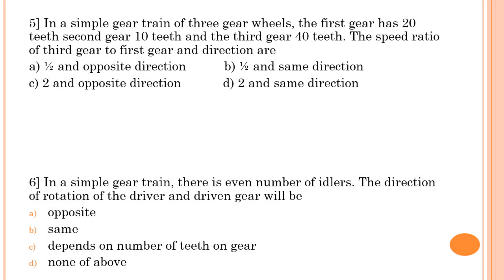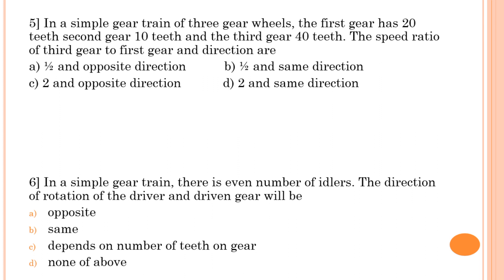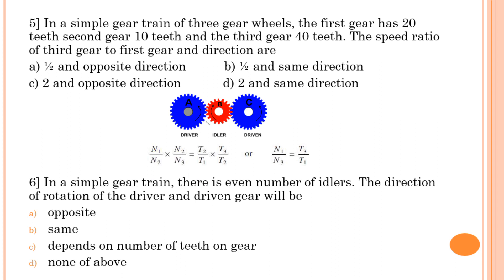Fifth question: in a simple gear train of three gear wheels, the first gear has 20 teeth, second gear has 10 teeth, and third gear has 40 teeth. The speed ratio of the third gear to the first gear and their directions are asked. As established, velocity ratio is N1/N3 = T3/T1, and does not depend on the idler gear.